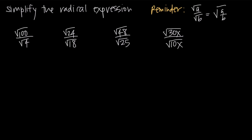In this video, we're talking about division of radicals or division of square roots. When we're dealing with division of radicals, the formula we need to remember is that the square root of a over the square root of b — when we have a fraction with a square root in the numerator and a square root in the denominator — we can combine those into one square root and just use a over b inside of the square root.